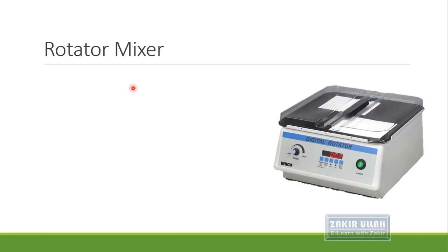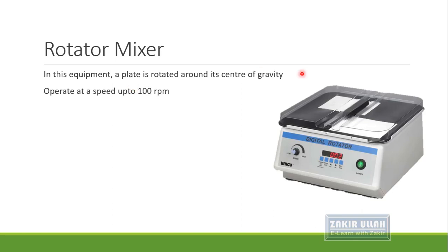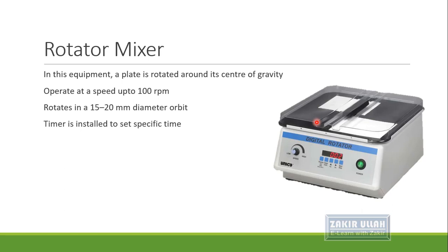The third type of mixer is the rotator mixer, in which a plate is rotated around its center of gravity. It can operate at speeds up to 100 RPM and rotates in a diameter of about 15 to 20 millimeter orbit. A timer is installed so we can set an experiment unattended for a specific time. It is supplied with a lid which helps prevent the drying of samples.